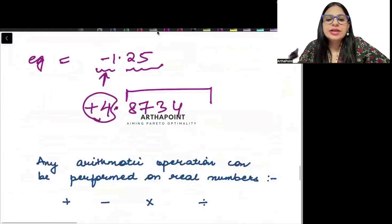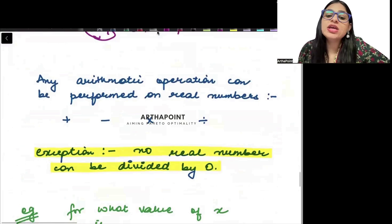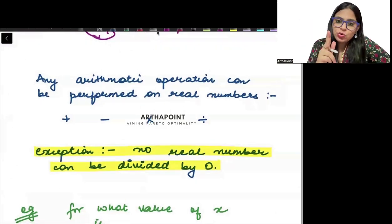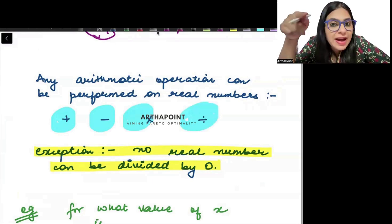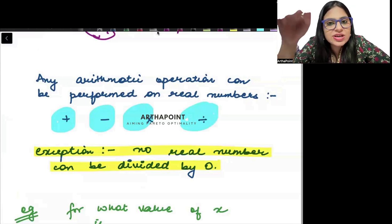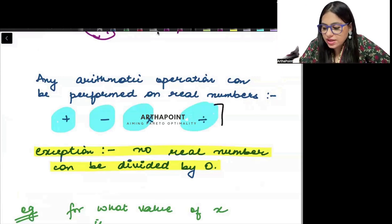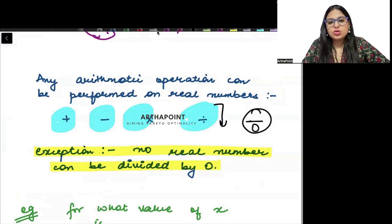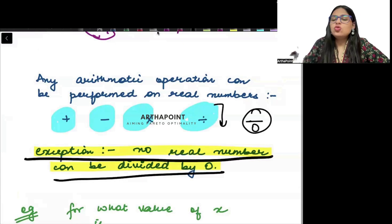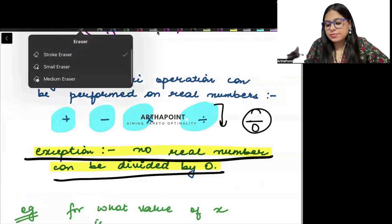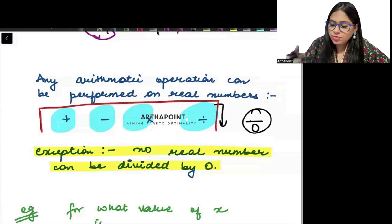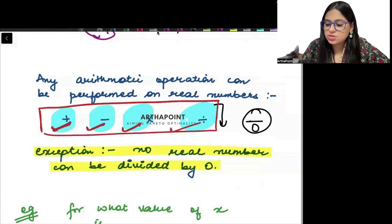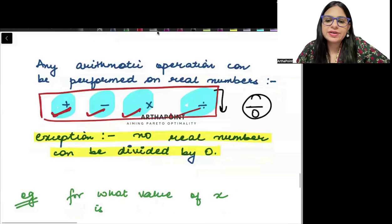We can perform any operation on real numbers — we can add, subtract, multiply, or divide real numbers. But remember, no real number can be divided by zero because anything by zero is not defined. Other than that, you can divide by any number. So we can perform any arithmetic operation — plus, minus, multiplication, division — but no real number can be divided by zero.